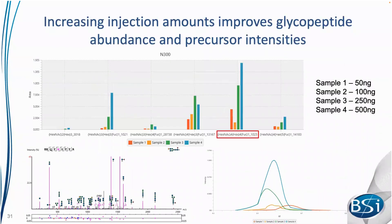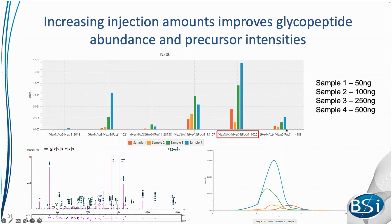We also tested how much starting material is required to identify each glycan. We started with 250 nanograms and tested from 50 nanograms up to 500 nanograms, motivated by service requests from customers with limited sample. In general, going down to 50 nanograms results in some lost identifications, and some PSMs may lack an associated feature or abundance value at lower limits. We find that 250 to 500 nanograms is the optimal amount of starting material to identify most glycans.